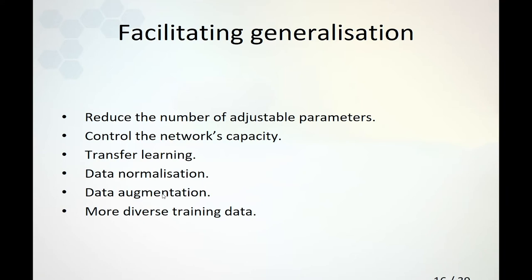Another technique is data augmentation, where we make the training data more diverse. We have the same type of training data but make it artificially more diverse by applying small transforms. The network then has to deal with a lot more variation during training. We could also try to acquire more training data — particularly more diverse training data — increasing the natural variation.